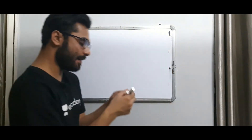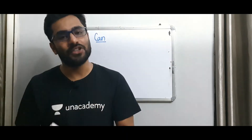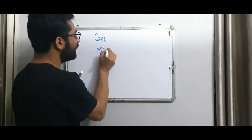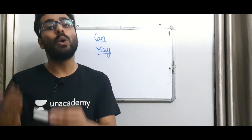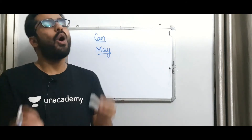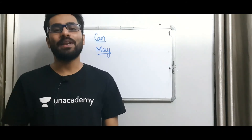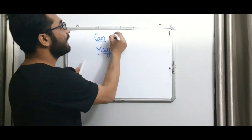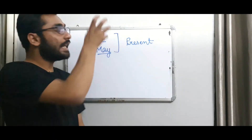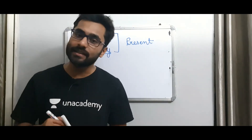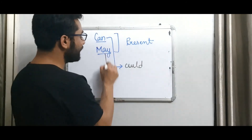Let's revise all four modal verbs. 'Can' is used for ability, capacity, and informal permission. 'May' is used for possibility when you're not sure but think it's possible, formal permission, informal permission, and expressing wishes — both 'can' and 'may' are used in present tense. When the same uses shift to past tense: 'can' becomes 'could', and 'may' becomes 'might'.